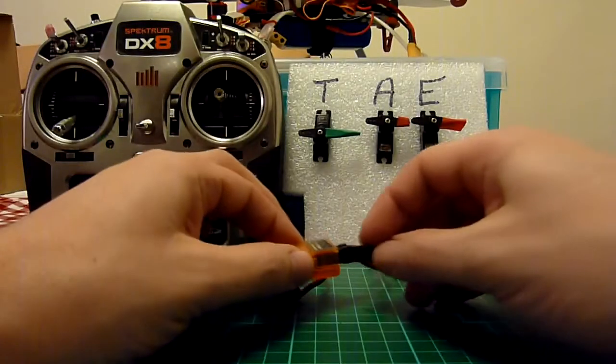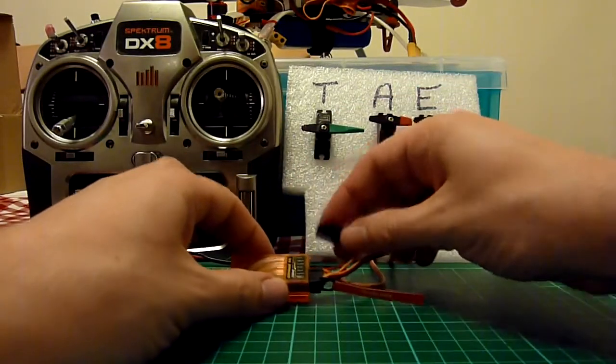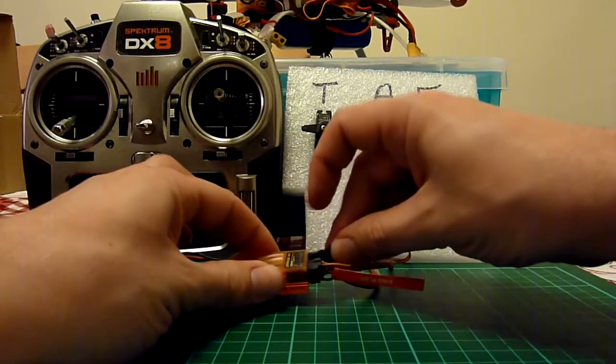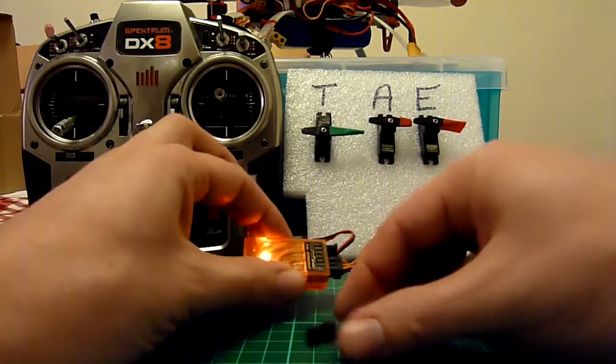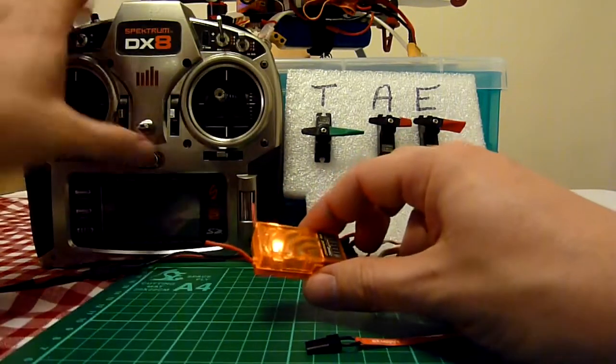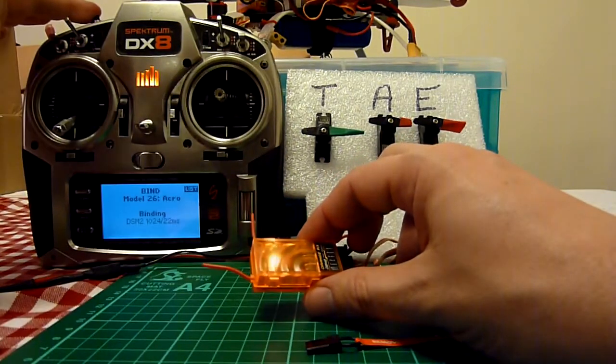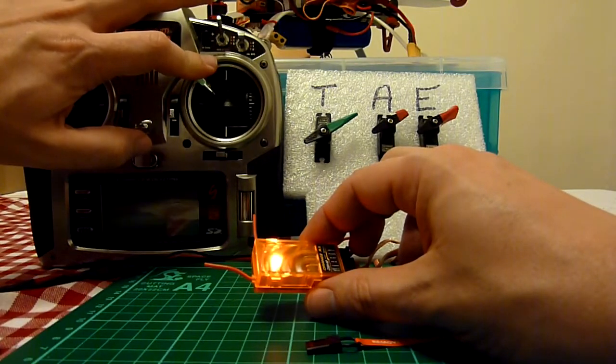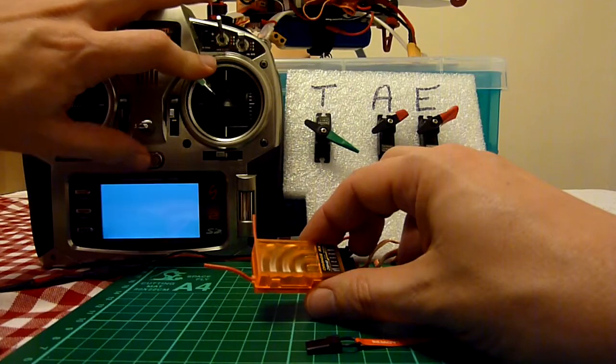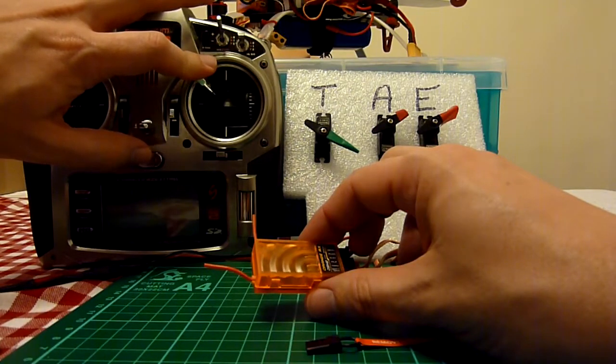So this is the orange 6 channel receiver. I plug in the bind plug and I'm pretty sure this one only does a hold. So I plug out the bind plug anyway. So that just does a hold. You can see the throttle goes to low but the other channels are just holding.